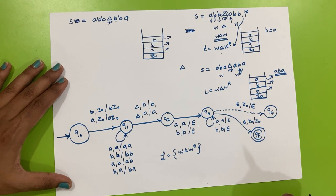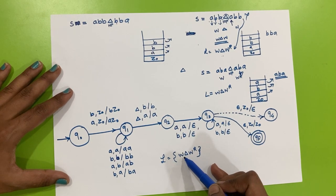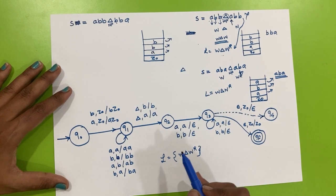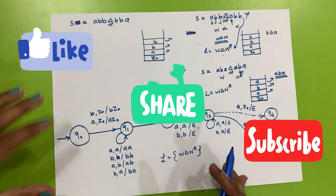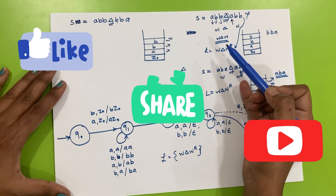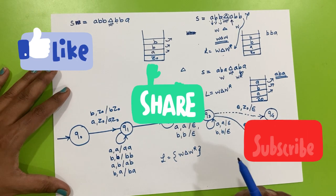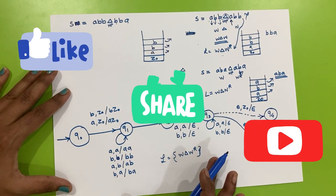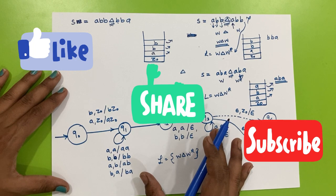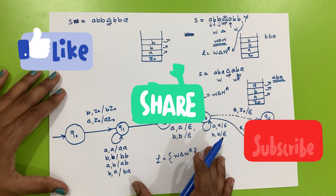Hope you understood how strings are defined in L, what w means, what w^R means, what △ means, and how the PDA processes strings — how the stack gets updated, when to push, and when to pop. If you have any queries, please comment. If you liked the video, please like, share, and subscribe to the channel. Thank you very much.